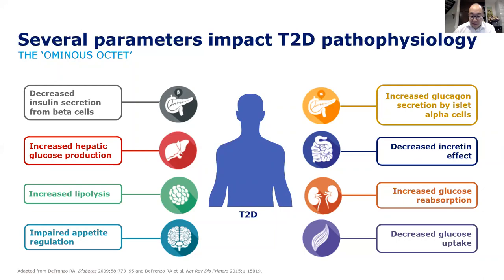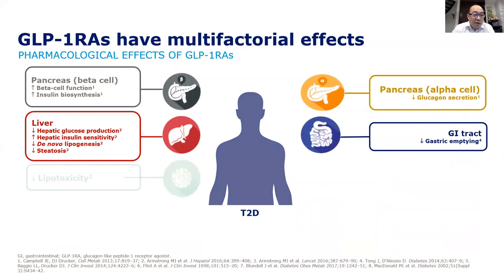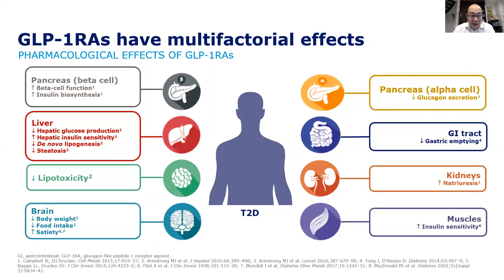GLP-1 analogues have multifactorial effects that can benefit type 2 diabetes pathophysiology. The main effects are on the brain — satiety — the pancreas, and the GI tract. They also help reduce lipotoxicity. Interestingly, GLPs may also help the kidneys with sodium excretion, and some studies suggest GLP analogs help with kidney function, though this is still theoretical and not on the exam. Overall, GLPs have a wide array of effects beneficial for type 2 diabetes.